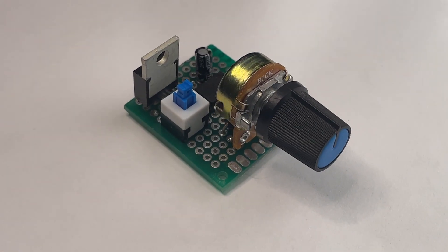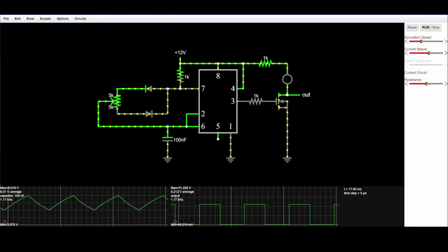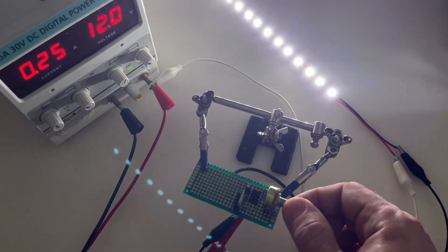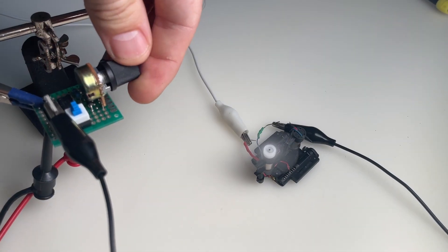Today I'll be explaining a simple LED dimmer circuit that can be made using only a small number of components. This circuit configuration could also be used as a DC motor speed controller.